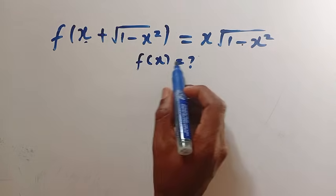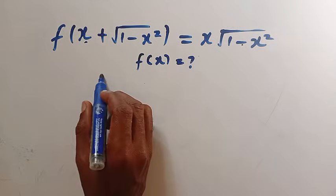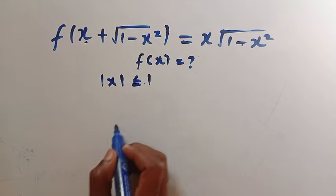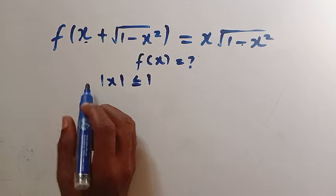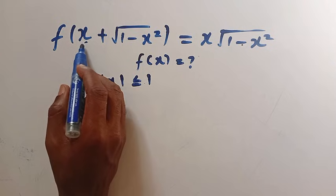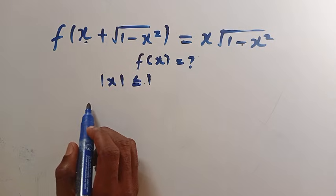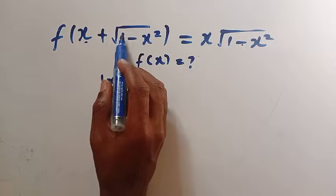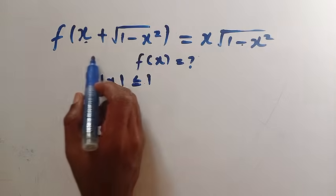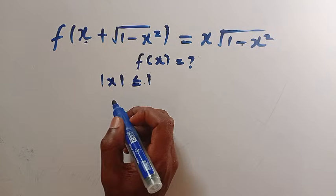We are interested to get f(x). Looking at this, the absolute value of x is always less than or equal to 1. If I let x = cos θ and √(1−x²) = sin θ, this shows that we will be solving this problem using some trigonometric identity.